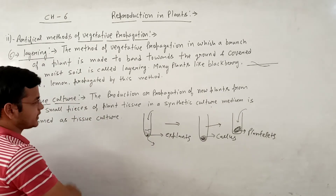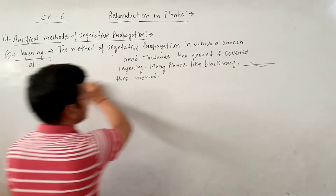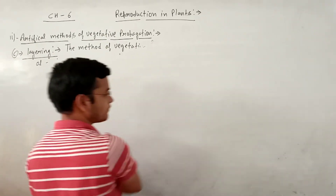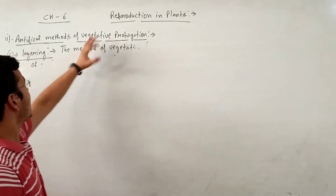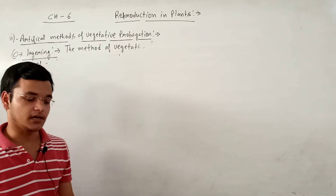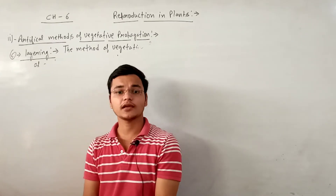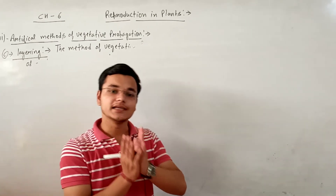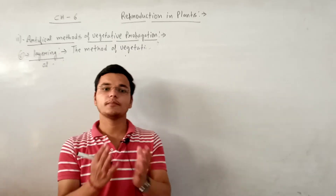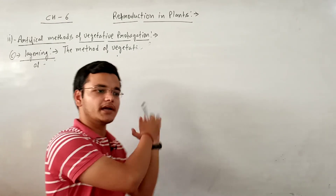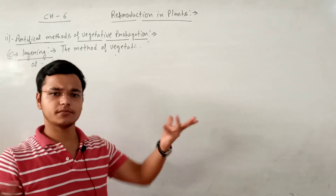अब यहाँ पर एक और question पूछा जाता है कि ये तो सारे types थे vegetative propagation के, artificial और natural. अगर आप से ये पूछा जाए कि vegetative propagation का advantage क्या है? Well, इसका advantage ये है कि हम large number of plants को produce कर सकते हैं. और जो plants produce होंगे, उनमें genetic dissimilarity बिल्कुल नहीं होगी, क्योंकि वो asexual reproduction से produce हो रहे हैं - एक single parent involved है. तो उनमें कोई भी variation नहीं आएगा, वो बिल्कुल अपने parent के look-alike होंगे.